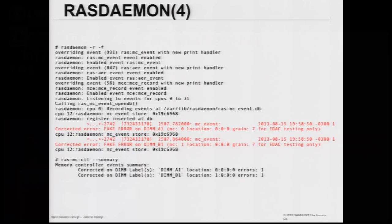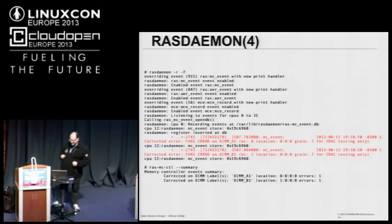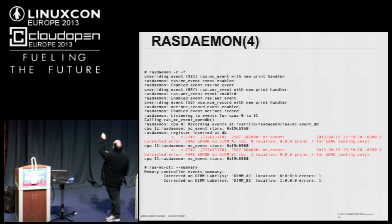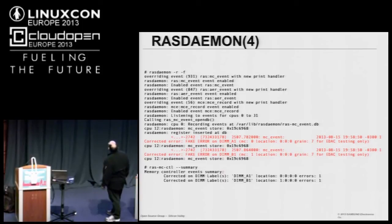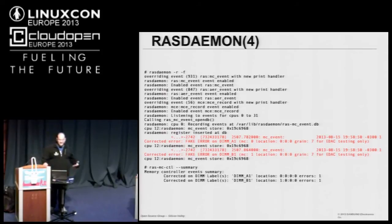Here I started the tool and used the fake injection tool to emulate a hardware error on that machine. In this case, two correctable errors were fake-generated — the first at DIMM A1, the second at DIMM B1, with the location shown as memory controller 0, slot 0, DIMM 0. I can also generate a summary of the errors. Since all errors are stored in a database, I can later do statistics and further analysis.